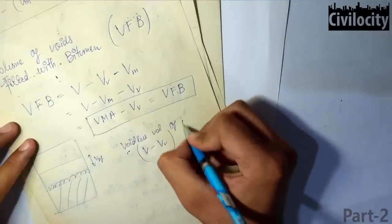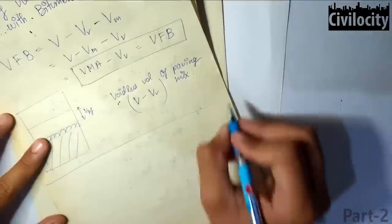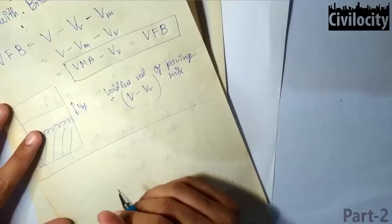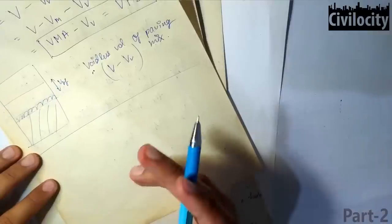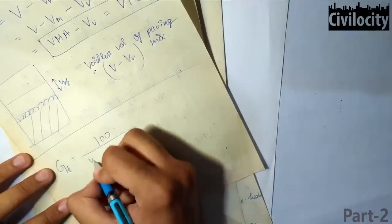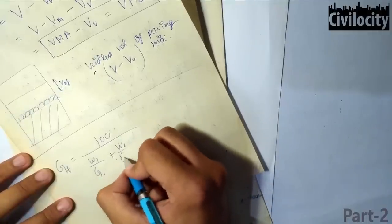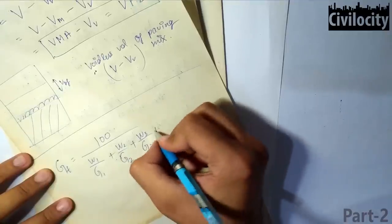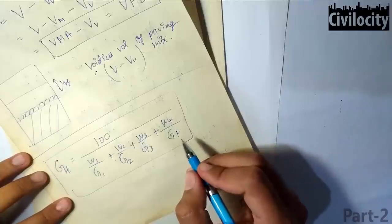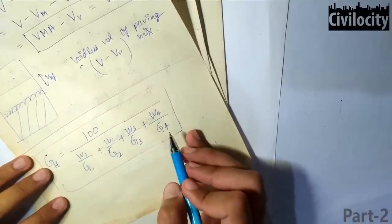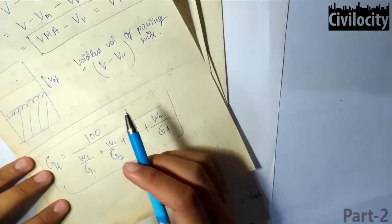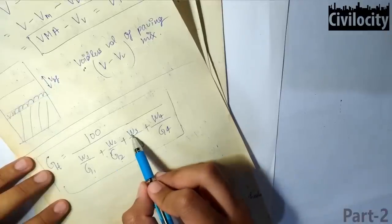Now let's discuss density and specific gravity. Suppose G1, G2, G3, G4 are the specific gravities of coarse aggregates, fine aggregates, filler, and bituminous binder respectively. The theoretical specific gravity of the bituminous mix, Gt, is given as Gt equals 100 divided by (W1/G1 plus W2/G2 plus W3/G3 plus W4/G4), where W1, W2, W3, W4 are the percentage by weight of coarse aggregates, fine aggregates, filler material, and bituminous binder.